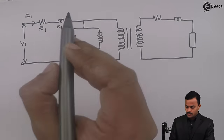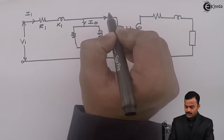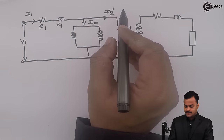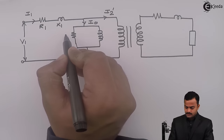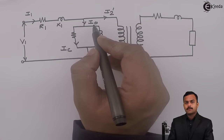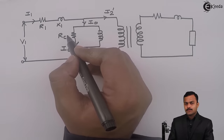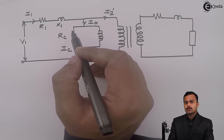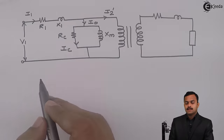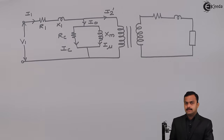This I1 has two components: the no-load primary current, which is denoted as I0, and the current which is responsible for nullifying the effect of Phi2, which we call I2 dash. This I0 also has two components. One flows through the core loss resistance RC, which is called the core loss component of no-load primary current and represents how much core loss is happening inside the core. The other flows through XM, the magnetizing reactance, and this current is Imu, the magnetizing component of no-load primary current I0.